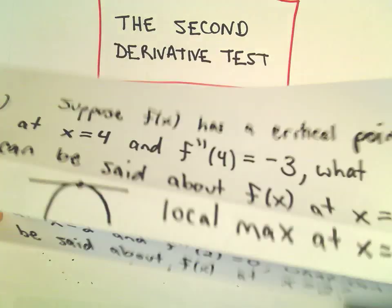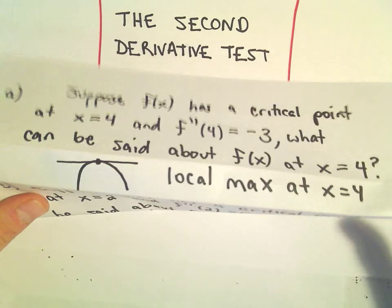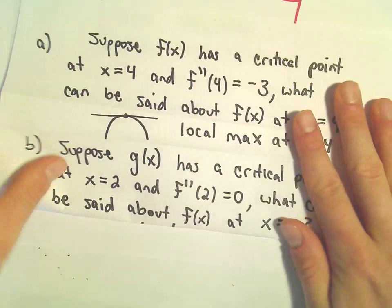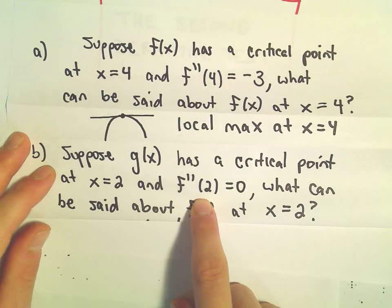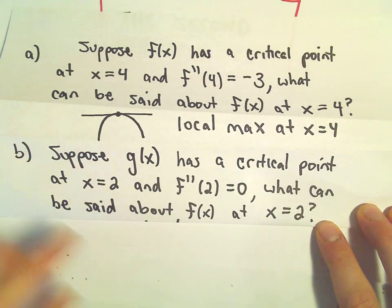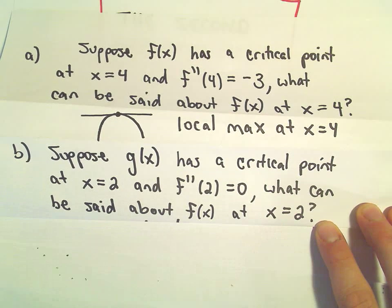So alright, part b here. Suppose g(x) has a critical point at x equals 2 and the second derivative at 2 equals 0. We want to know what can we say about the function, what's happening at x equals 2.